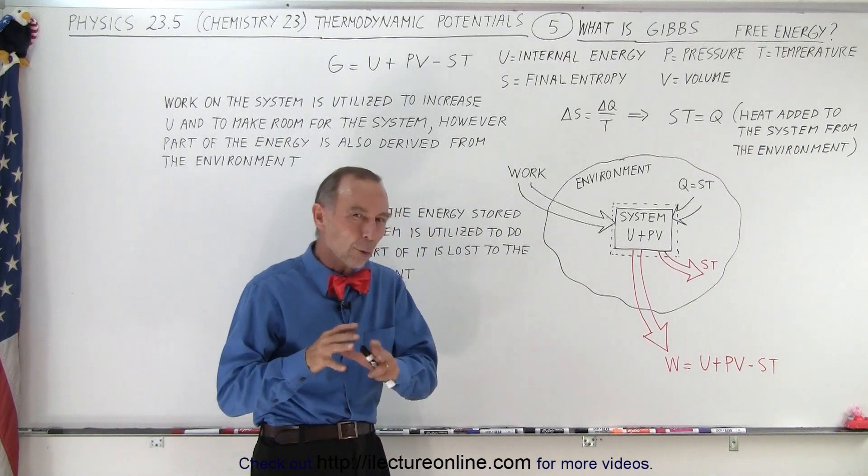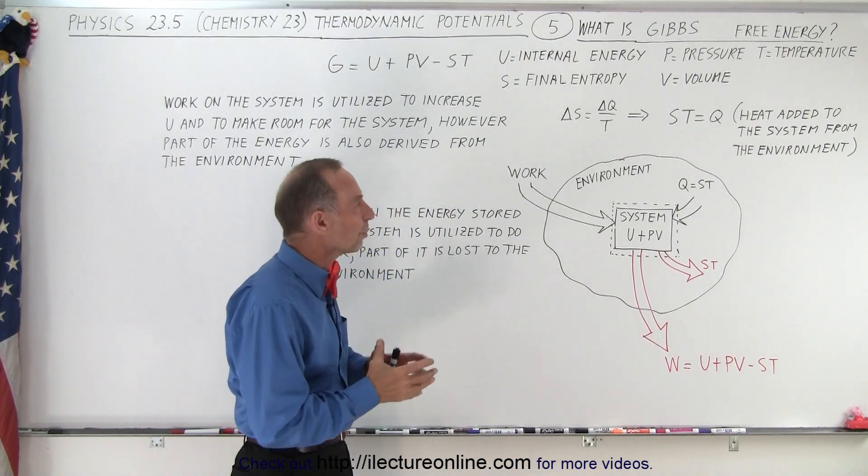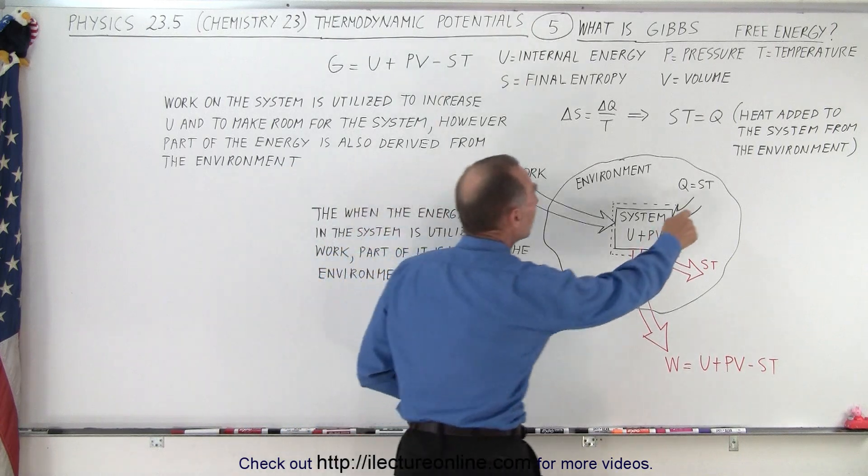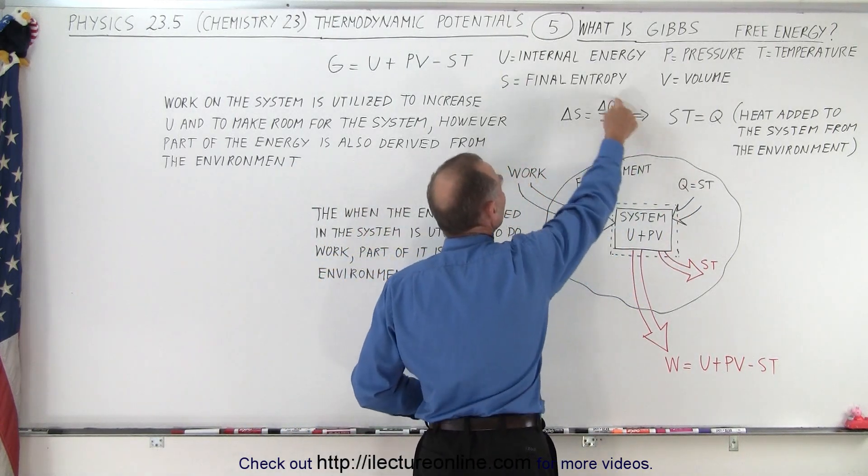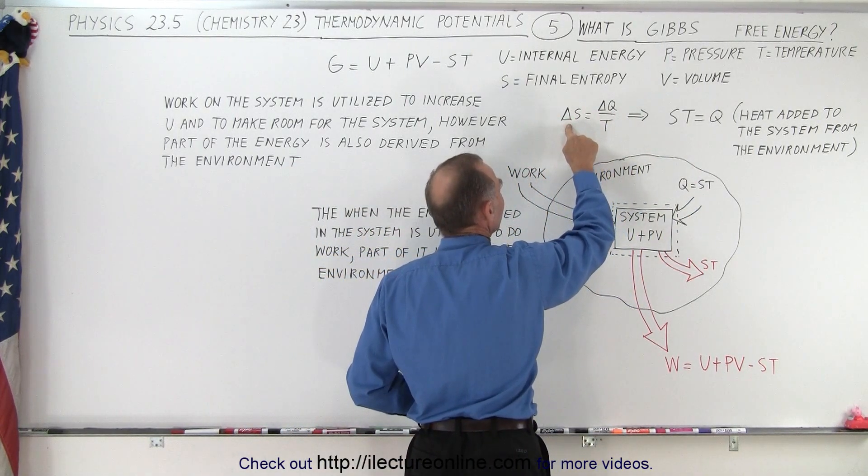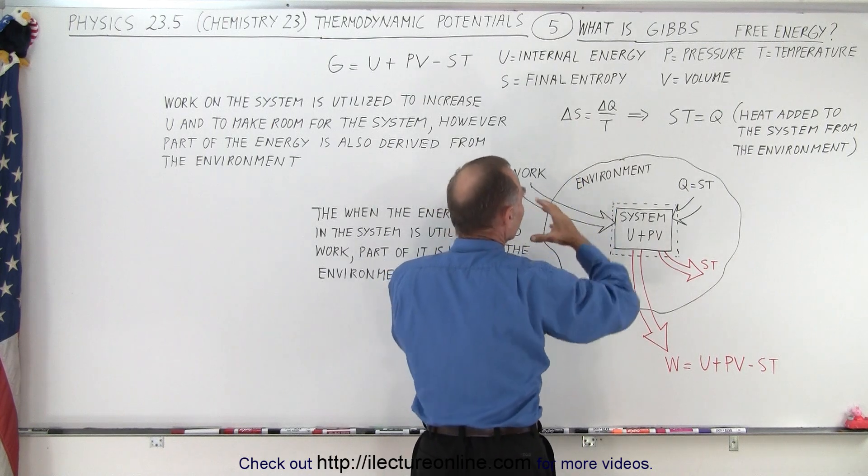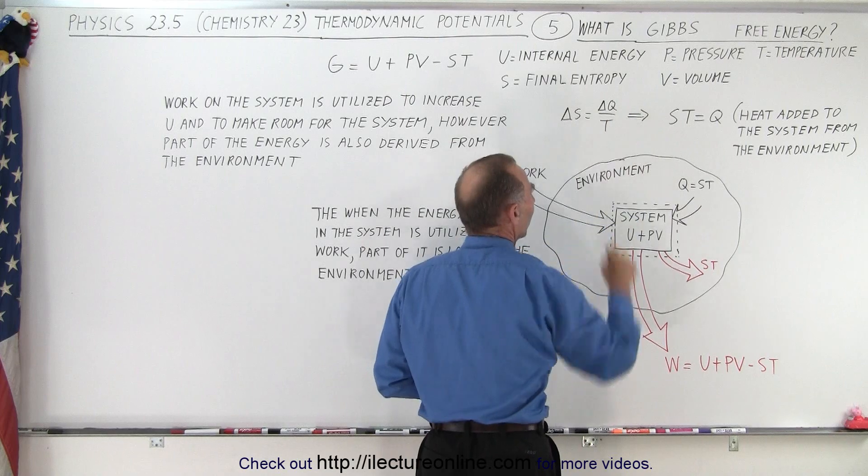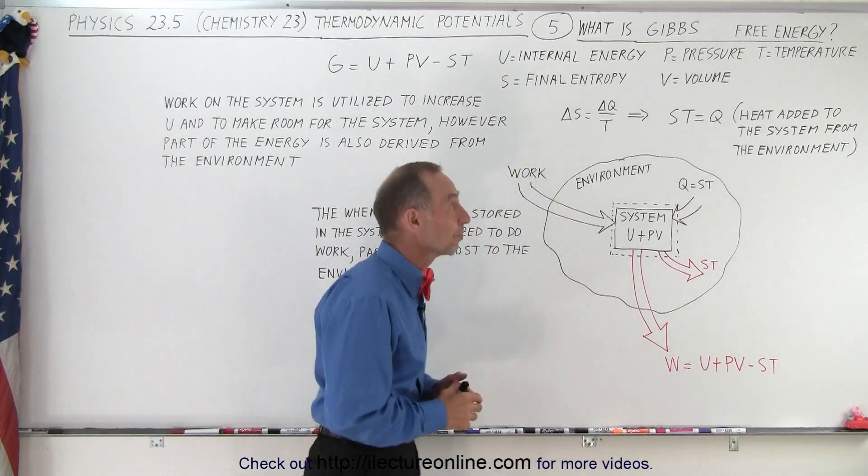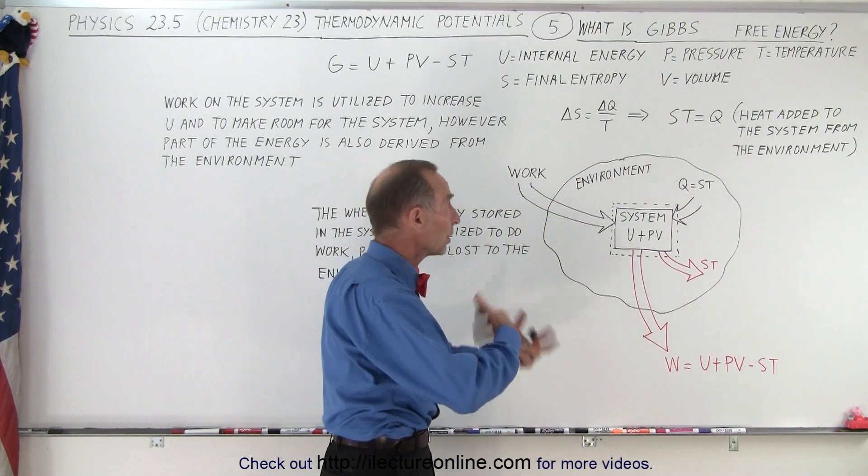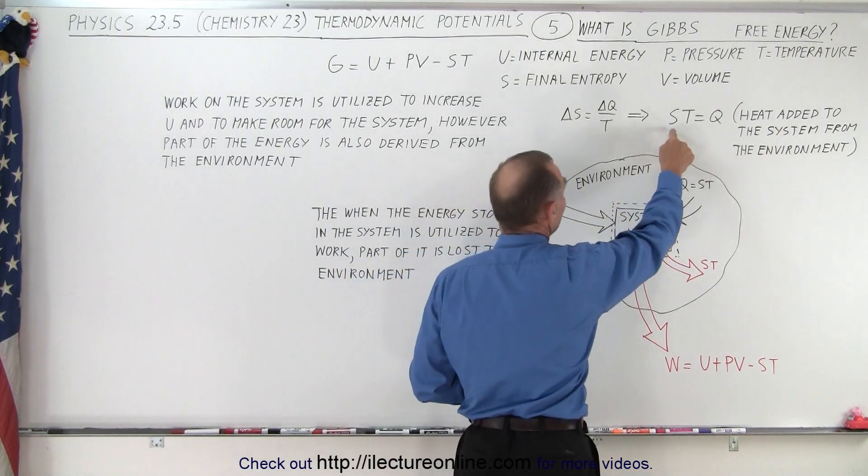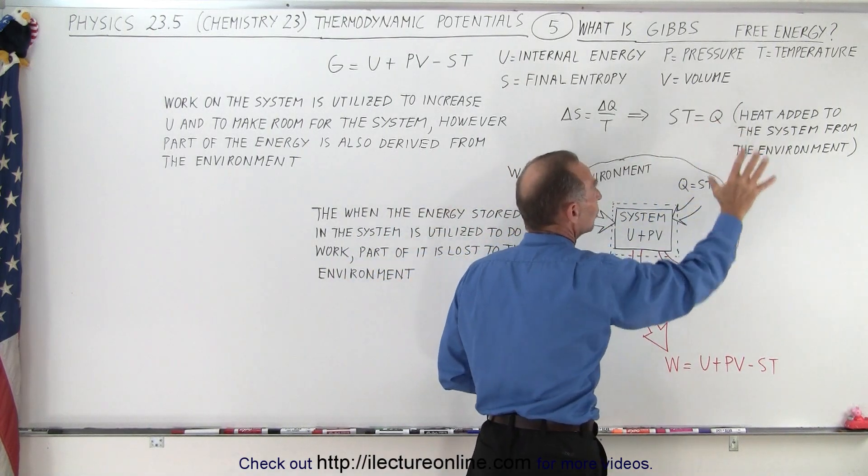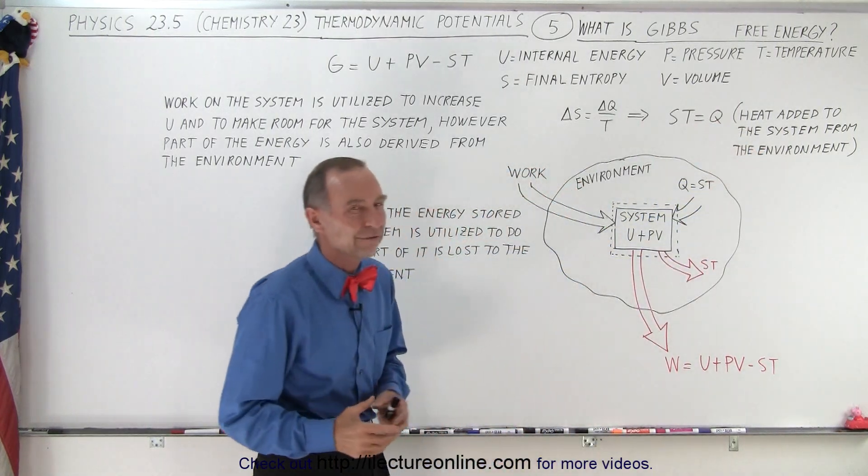Without knowing too much about entropy at this point, we can realize that the change in entropy of a system or of the environment and the system is equal to the heat exchanged divided by the temperature at which it happens. That means we can rearrange the equation and show that S times T is indeed equal to Q, the heat added to the system from the environment.